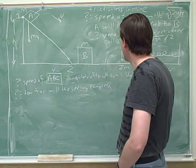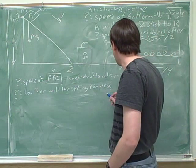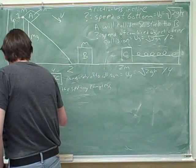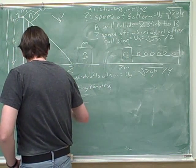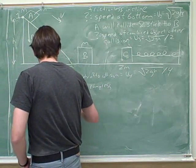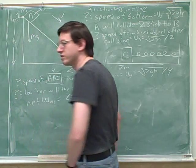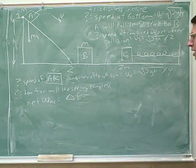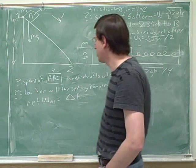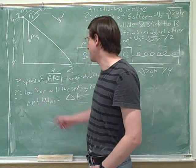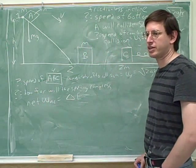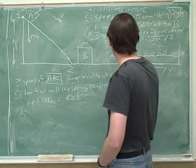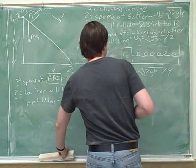So what was our general formula for conservation of energy? That was: net work by the non-conservative forces equals delta E. In order to know what the work is, we're going to have to identify the forces on this combined A, B, and C object.